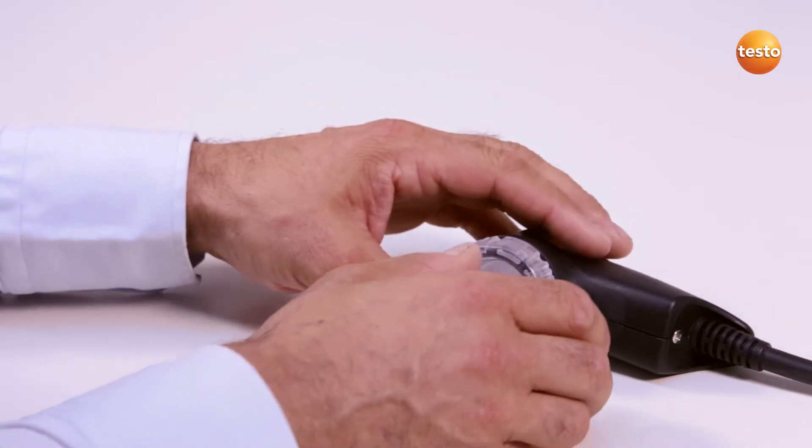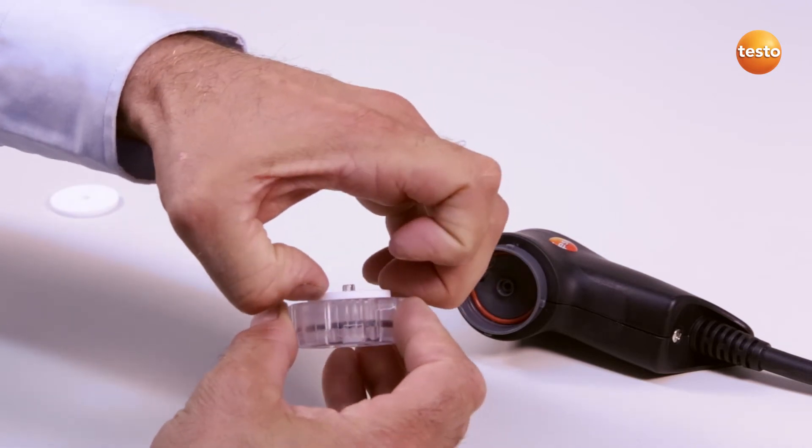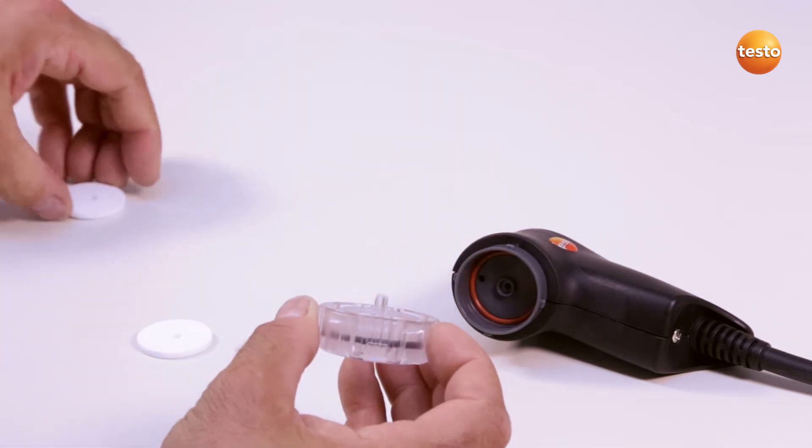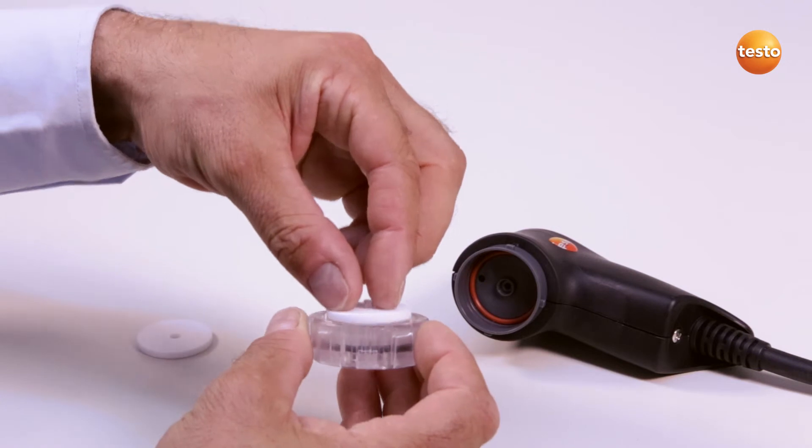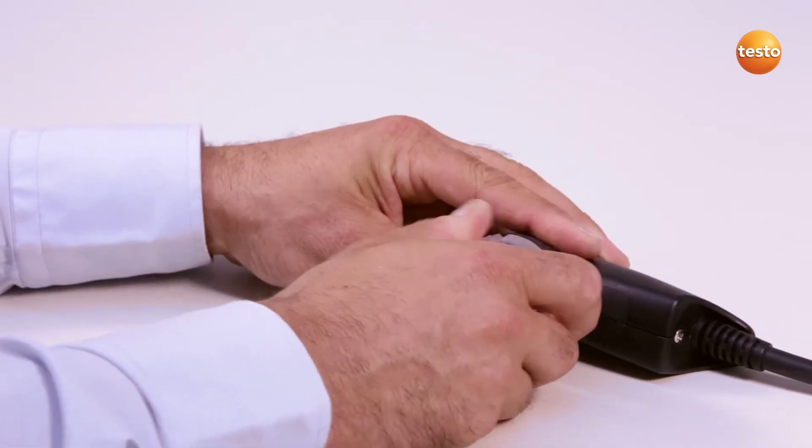In order to exchange the particle filter, I open the filter chamber by turning slightly anti-clockwise. I remove the filter disc and replace it with a new one. I finally replace the filter chamber and close it.